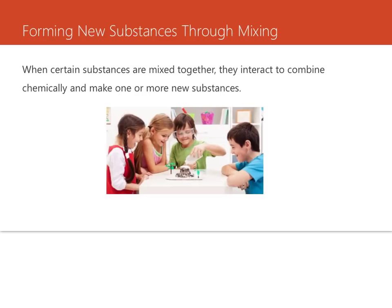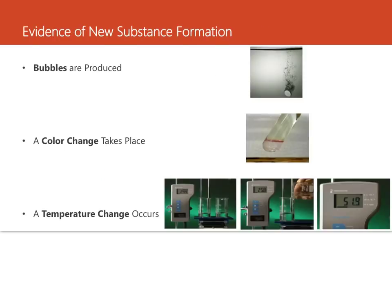The formation of these bubbles when the baking soda and the vinegar mix is one sign that the original substances have chemically combined. Other evidence could include a change in temperature with certain substances or even a change in color. So let's look at evidence of new substance formation — how can we know that a new substance was formed? When substances chemically combine to form one or more new substances, there is often some evidence: gas bubbles are produced, there may be a color change, or a temperature change.